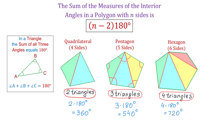So to find the sum of the interior angles in a polygon of n sides, we multiply the number of triangles by 180 degrees. And because the number of triangles is always two less than the number of sides, the formula is n minus 2 times 180 degrees.